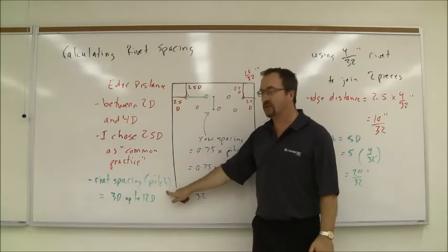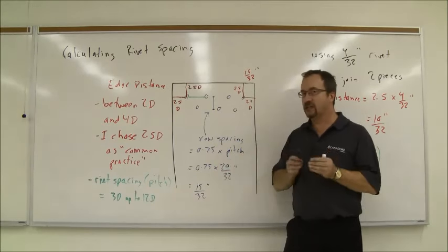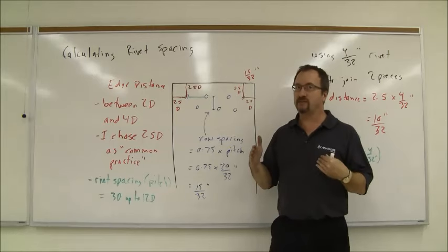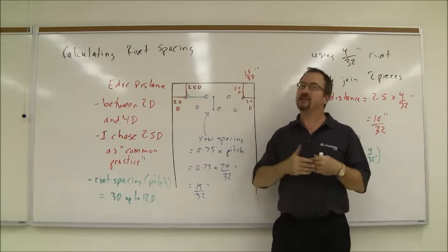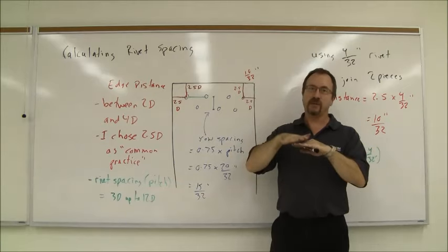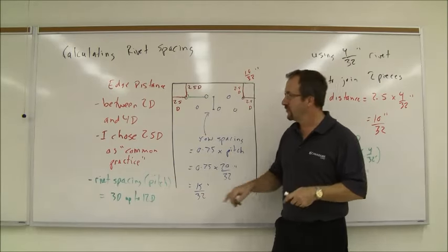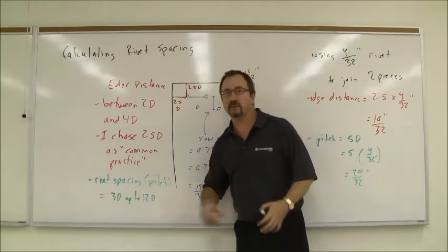Pitch can be as little as three times the diameter but no more than twelve times the diameter. If they're too close, as I said, there's too many holes that weakens the metal. If it's too far apart, there's a chance for the metal pieces to separate. So maximum of twelve times the diameter, minimum of three times.